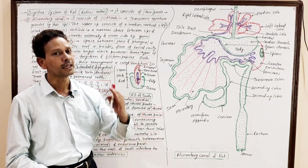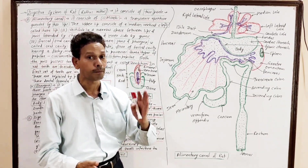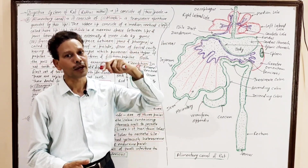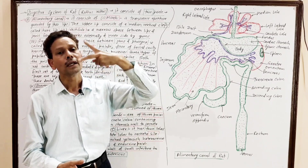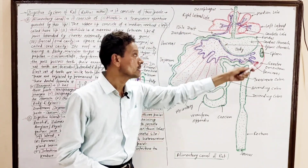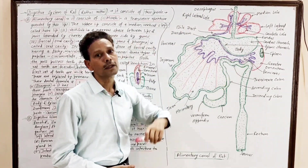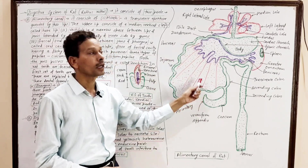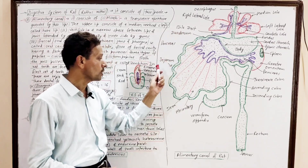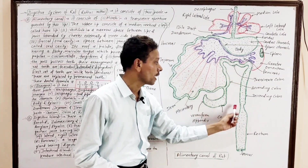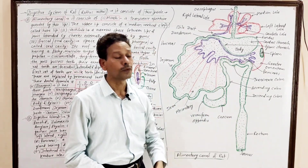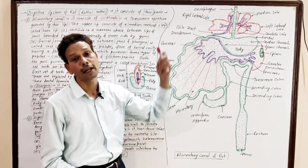In summary, the alimentary canal of RAT consists of the following parts: mouth, vestibule, oro-buccal cavity, pharynx in the neck region, esophagus (food pipe), stomach (widest part), small intestine with three parts — duodenum, jejunum, ileum — and large intestine divided into cecum, colon, and rectum, which opens by the anus. This is the complete alimentary canal.